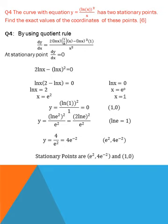Now we put these values into equation y equals ln(x squared) over x. Putting x equals 1: since ln(1) equals 0, y equals 0 over 1 equals 0. Putting x equals e squared: ln(e squared) squared over e squared equals (2 ln e) squared over e squared. Since ln(e) equals 1, this becomes 4 over e squared, which equals 4e to the power minus 2. So the first stationary point is (1, 0) and the second is (e squared, 4e to the power minus 2).